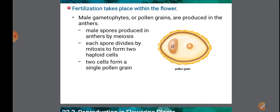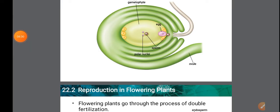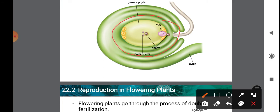The pollen tube grows down into the style. The male gamete present in the pollen tube moves into the ovule and fuses with the female gamete inside the ovule. This complete process is called fertilization.